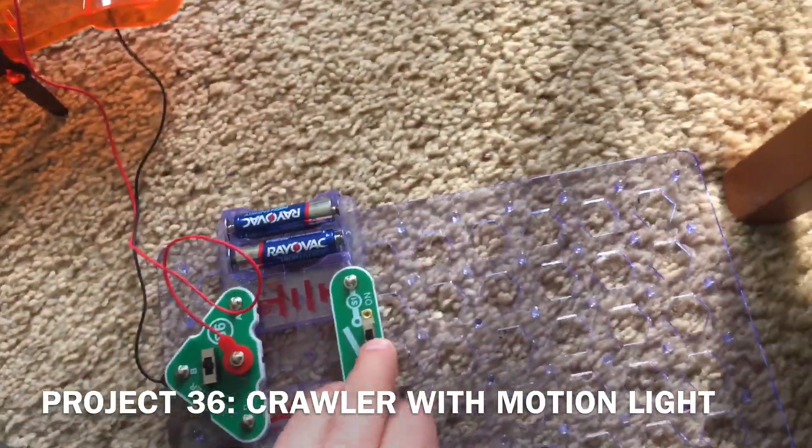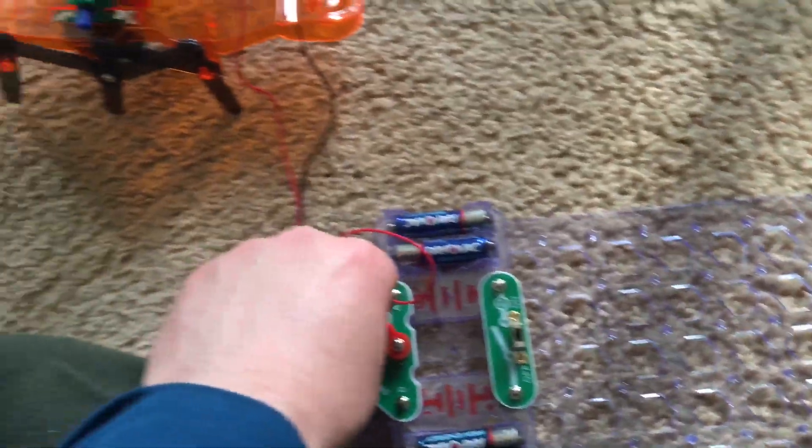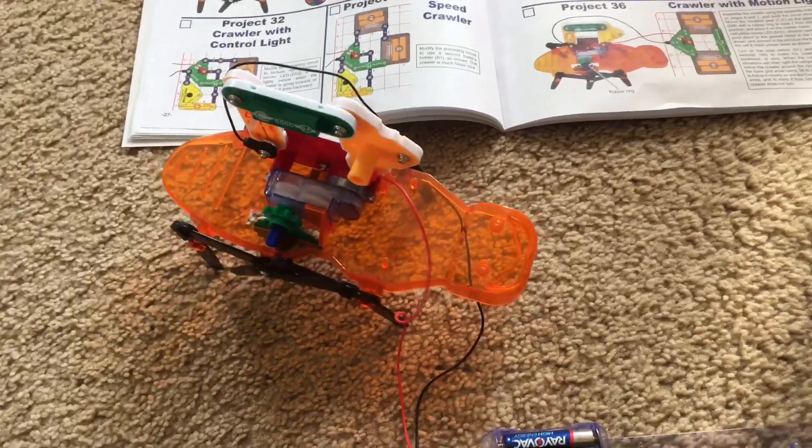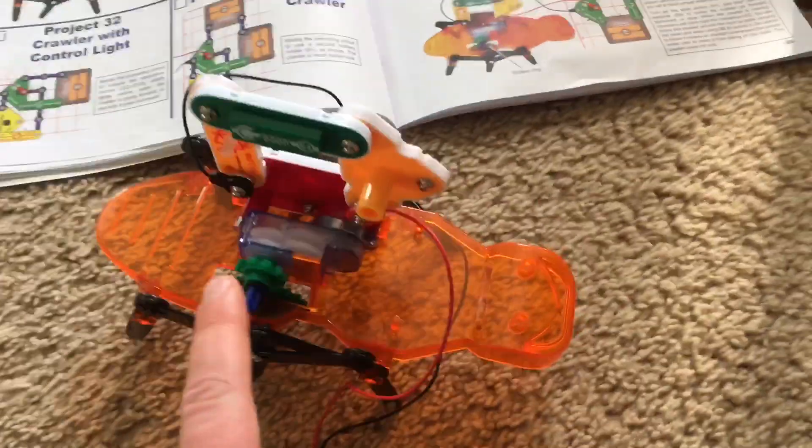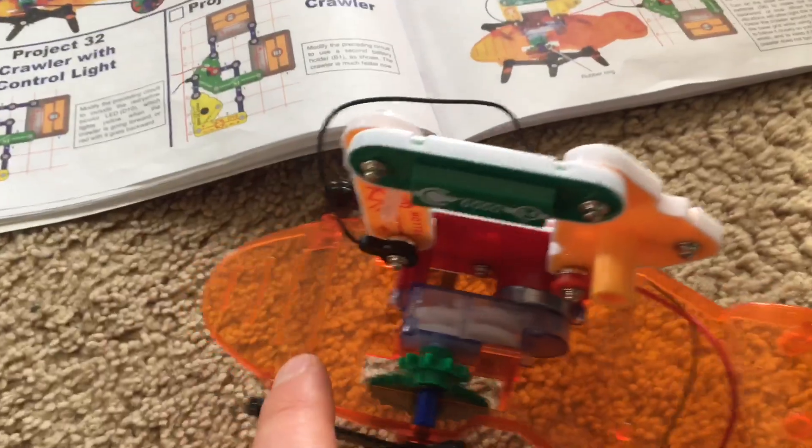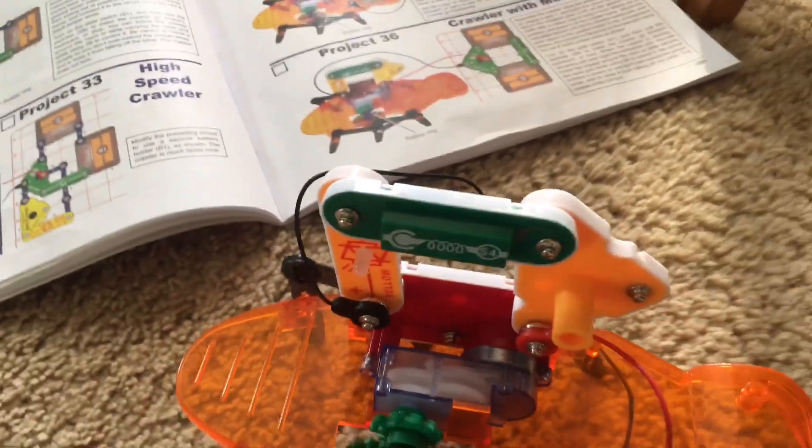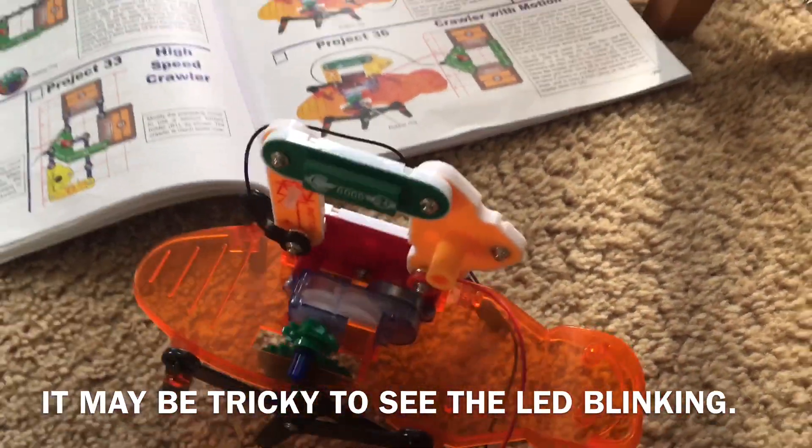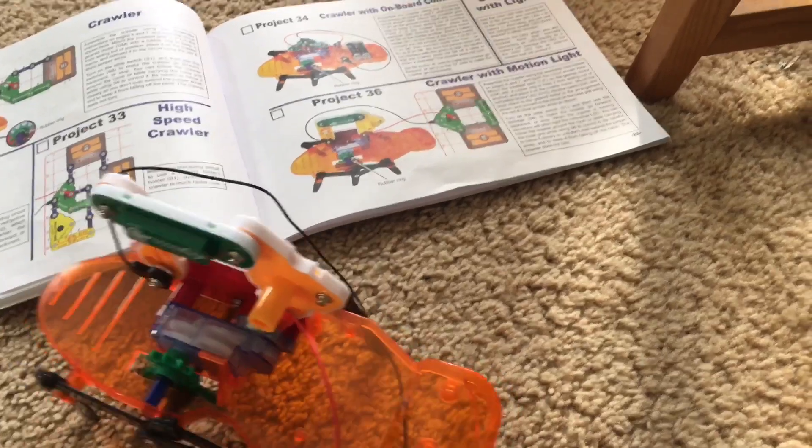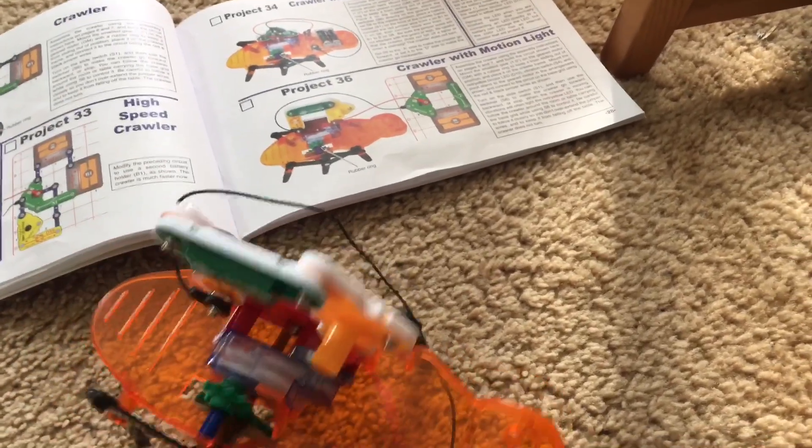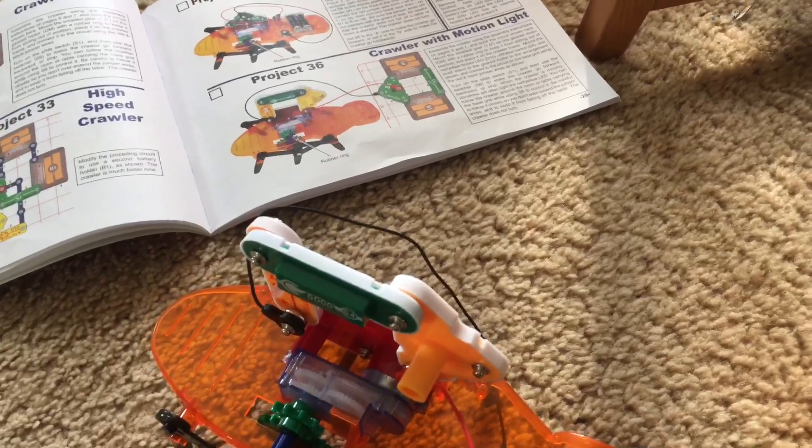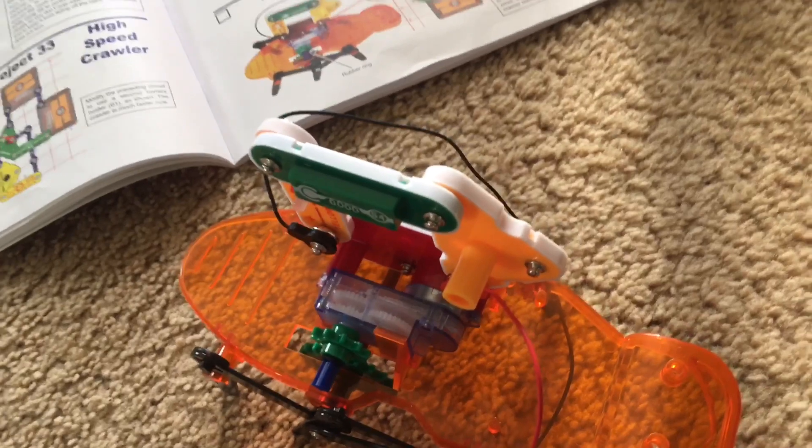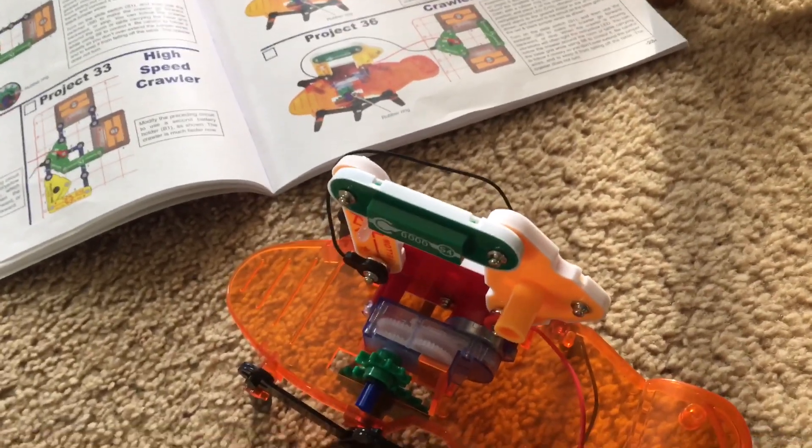I'm going to turn on the slide switch and then make the crawler move forward, it can move backwards too, but you will see that the bicolor LED blinks every so often. That is because the vibration switch attached to the crawler will complete the circuit that the bicolor LED is included in when the contacts in there are closed.